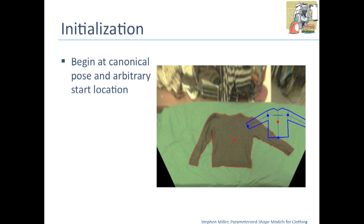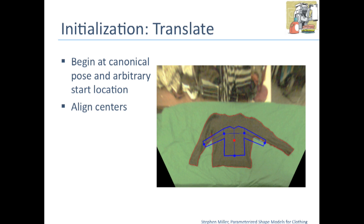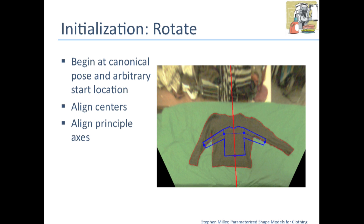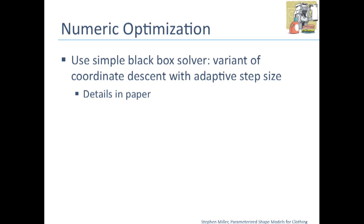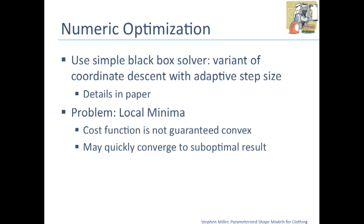For the initialization procedure, we start with some canonical pose in an arbitrary starting location, align the two centers to get the translation, align the principal axes to get a net rotation, and align the bounding boxes to get a rough sense of scale. For the actual optimization, we use a black box solver which is a variant of coordinate descent with an adaptive step size. The problem with any gradient descent method is that you're bound to get caught in many local minima, especially because our cost function is far from convex.